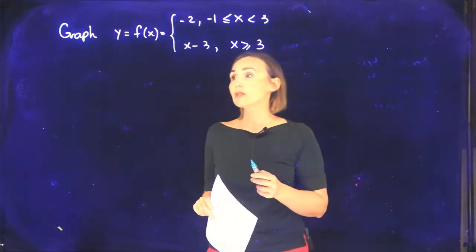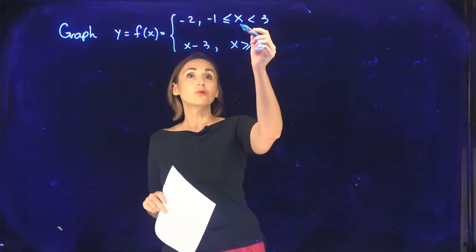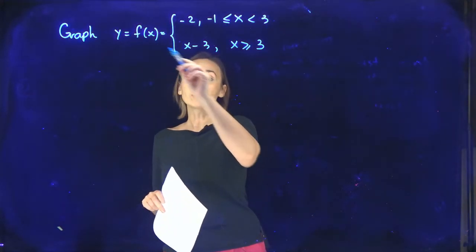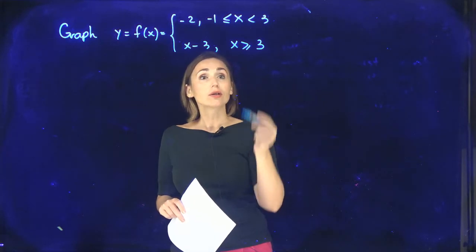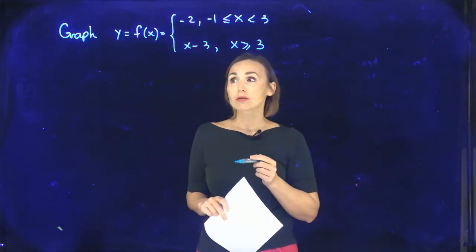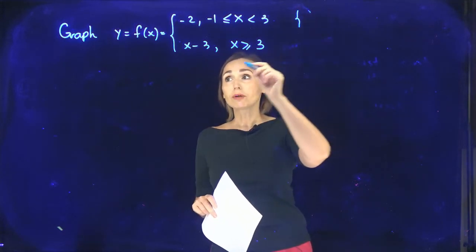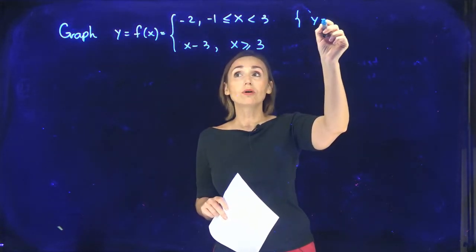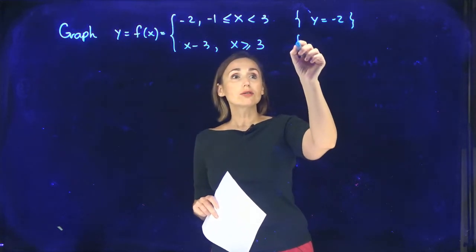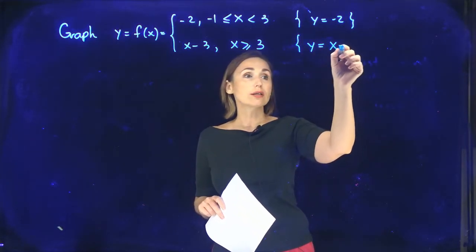How to graph a piecewise defined function? My function is negative 2 for x between negative 1 and 3, and my function is x minus 3 for x greater than or equal to positive 3. So here it's helpful to understand that my function is y equals negative 2, and here my function is y equals x minus 3.